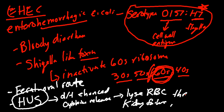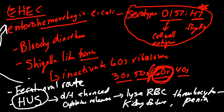EHEC is transmitted via the fecal-oral route. You also associate it with hemolytic uremic syndrome (HUS), which is due to enhanced cytokine release. This cytokine release will lyse red blood cells, cause kidney failure, and may also cause thrombocytopenia. If a patient presents with these symptoms, hemolytic uremic syndrome caused by EHEC should be on your differential. Importantly, EHEC creates a toxin but does not penetrate the intestinal epithelium — it acts through toxin production only.